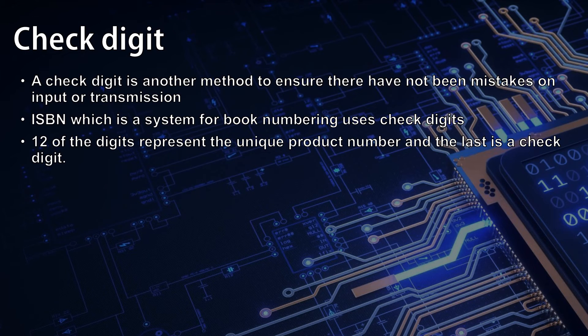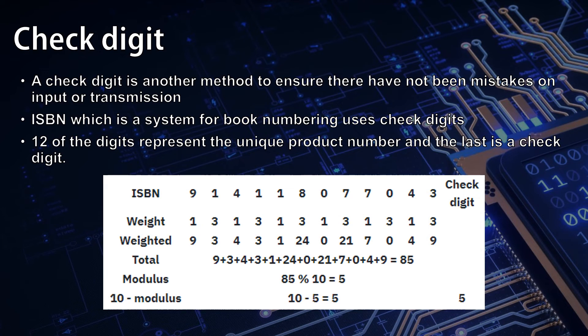To calculate the check digit, each digit in the ISBN is given a weight. Odd-numbered digits, the first, third, fifth, etc., are given a weight of 1. Even-numbered digits are given a weight of 3. Each digit is multiplied by its weight to get a weighted digit. These are then added together to get a total.